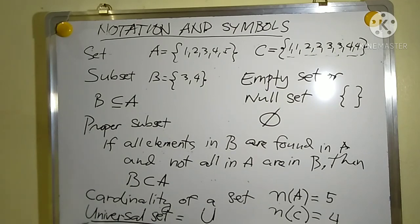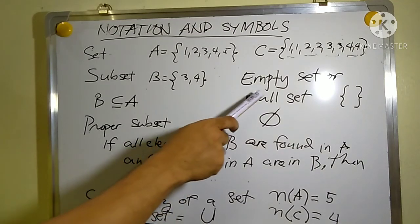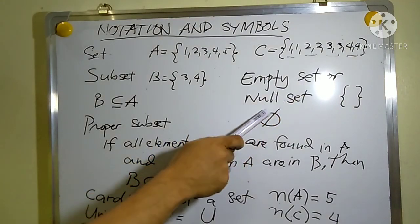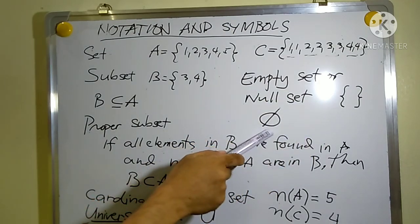We also have the universal set, denoted by capital U. The universal set means that all possible elements are present in the set under consideration. The last one is called the empty set or null set, and this is the symbol for the empty set or null set.